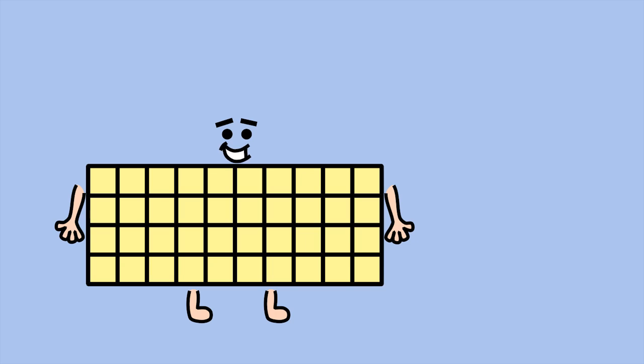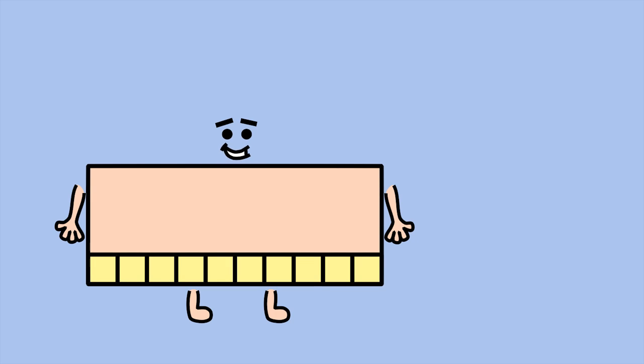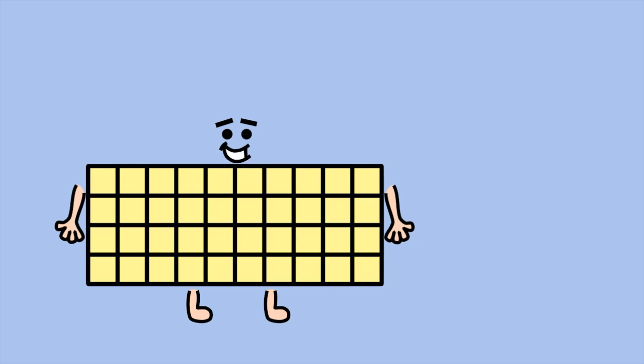Each row has 10 squares, so you can use skip counting by tens to add up the total number of squares: 10, 20, 30, 40. If you know your times tables, there's an even quicker way of working out my area.